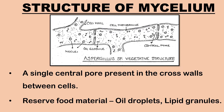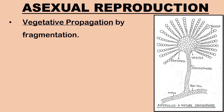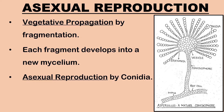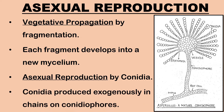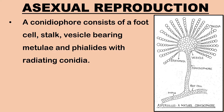Now let us understand the mode of reproduction in Aspergillus. Vegetative propagation is by fragmentation — the filamentous fungus breaks into several fragments and each fragment develops into a new mycelium under favorable conditions. Asexual reproduction is by means of asexual spores called conidia, produced exogenously in chains at the tips of conidiophores. A conidiophore consists of a foot cell, stalk, and vesicle bearing sterigmata and phialides with radiating conidia.